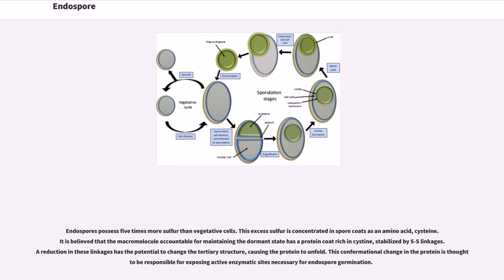Endospores possess five times more sulfur than vegetative cells. This excess sulfur is concentrated in spore coats as the amino acid cysteine. It is believed that the macromolecule accountable for maintaining the dormant state has a protein coat rich in cysteine, stabilized by disulfide linkages. A reduction in these linkages has the potential to change the tertiary structure, causing the protein to unfold. This conformational change in the protein is thought to be responsible for exposing active enzymatic sites necessary for endospore germination.